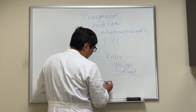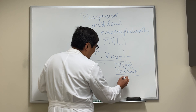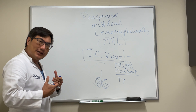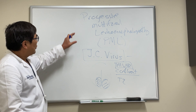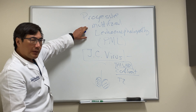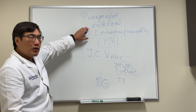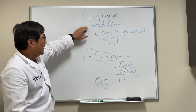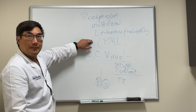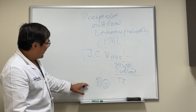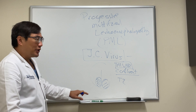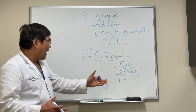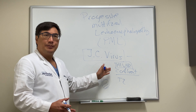It produces confluent T2 change that, for us, likes to be in the occipital lobe. So if you've got a progressive and multifocal white matter disease causing a leukoencephalopathy, you should really be thinking about PML. For us, that means homonymous hemianopsia or cortical visual impairment associated with encephalopathy in an HIV positive patient.